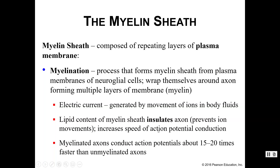This increases the speed of action potential conduction. This little bit of insulation helps us go faster. In fact, myelinated axons can conduct action potentials anywhere between 15 and 20 times faster than unmyelinated axons. You know that your nervous system already goes pretty quickly — myelin helps it go even faster.